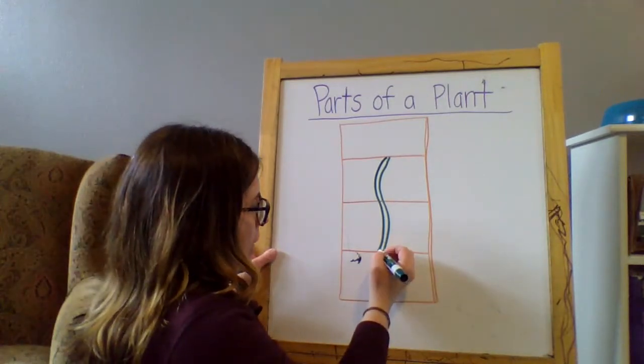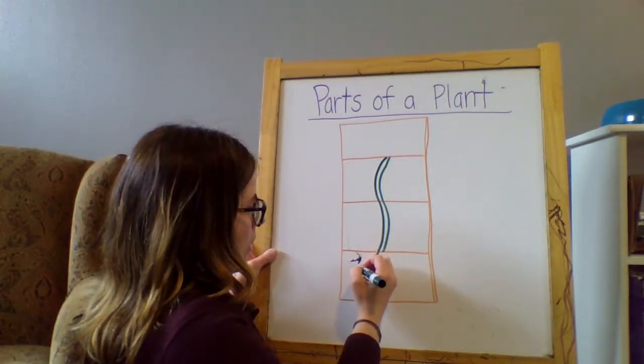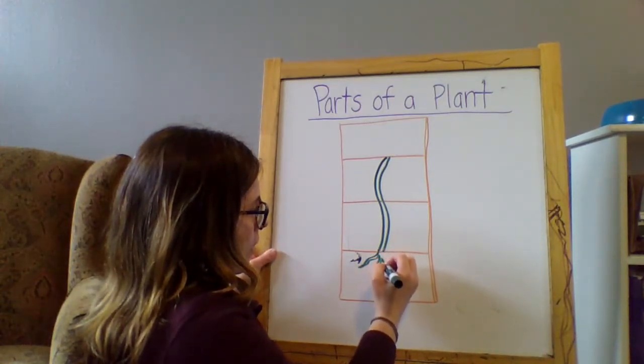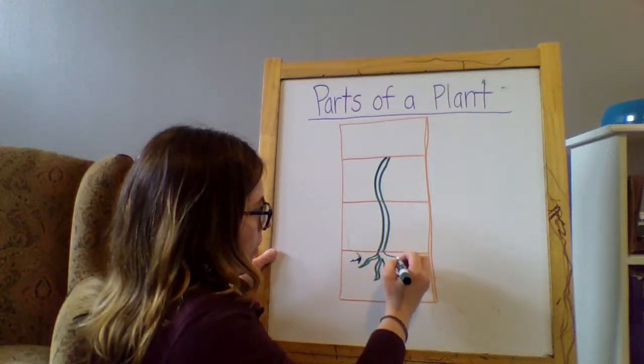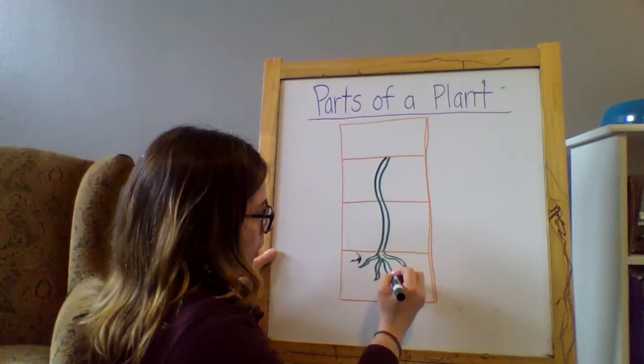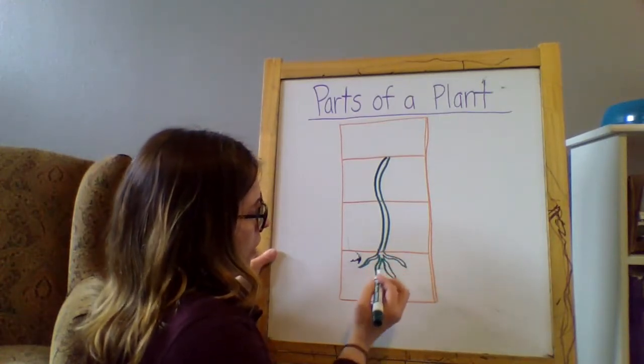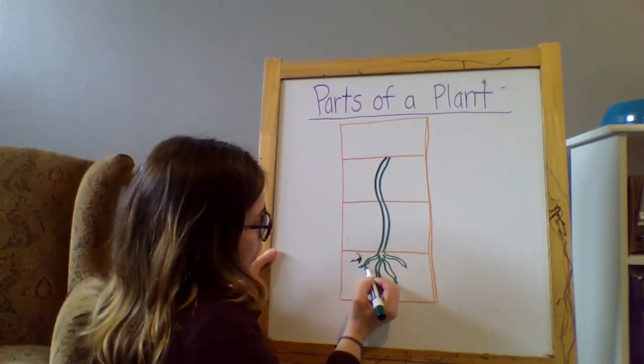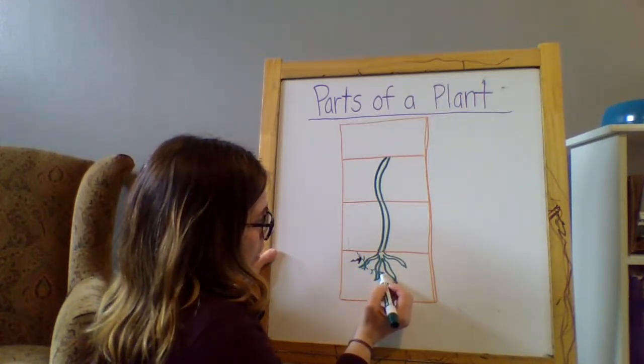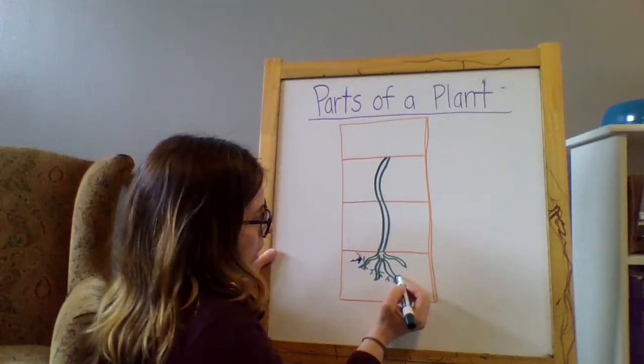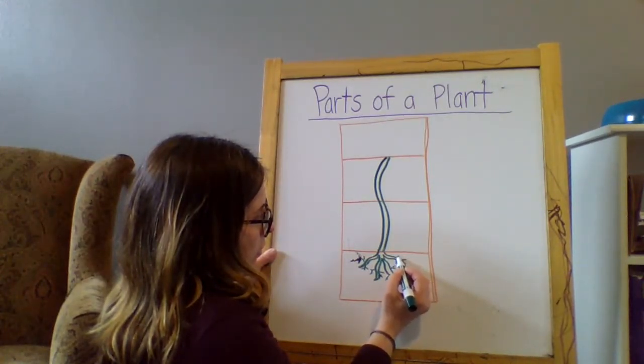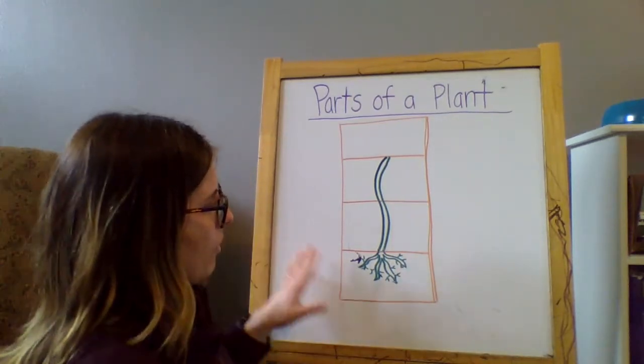And then I went on to the roots. So the roots come down here and I drew these like thicker roots. And then I went through after and I added the root hairs onto these thicker roots. So those are the thicker roots. And then I just added like little lines coming off as the root hairs. See that? The little teeny root hairs.